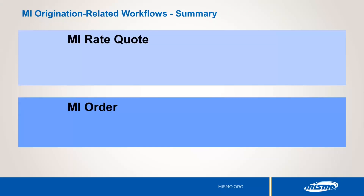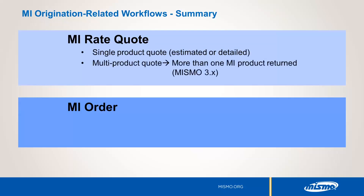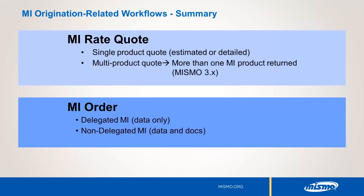Now we're going to explore MI origination workflows in detail. For MI rate quotes, there are several options available depending on which MISMO standard you plan to implement. A single MI product quote is supported in both the 2.3.1 and 3.x MISMO formats. Quotes can either be detailed or estimated, with detailed quotes requiring more data. Quoting in MISMO 3.x allows for the ordering of multi-product quotes, which returns multiple MI products and prices for one loan scenario. For MI orders, both MISMO formats support needs equally. There are two different types of MI orders: a delegated MI order that requires only an exchange of data to complete the transaction, and a non-delegated MI order that requires delivery of both data and a defined set of loan documentation.